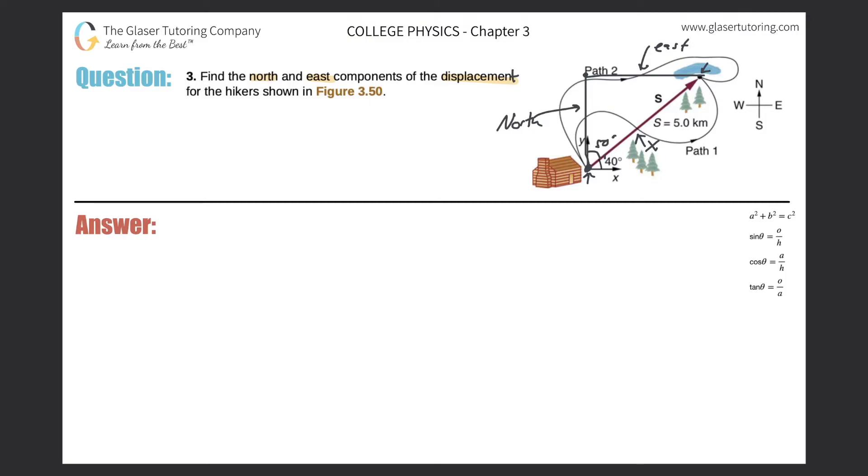This S right here is the length of the displacement, okay? So let's just rewrite it down here just so we have a little more room. This side here was 5.0 kilometers, we found this angle here to be 50 degrees, and what we're doing is we're looking for the north and the east components.